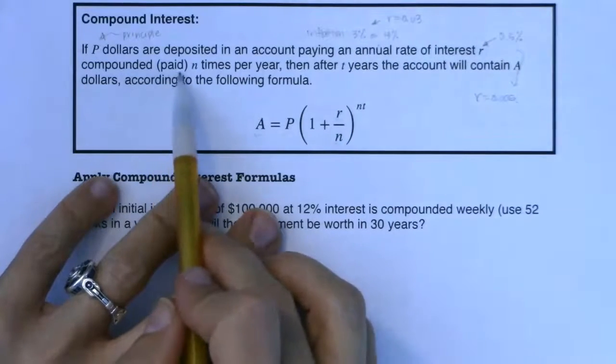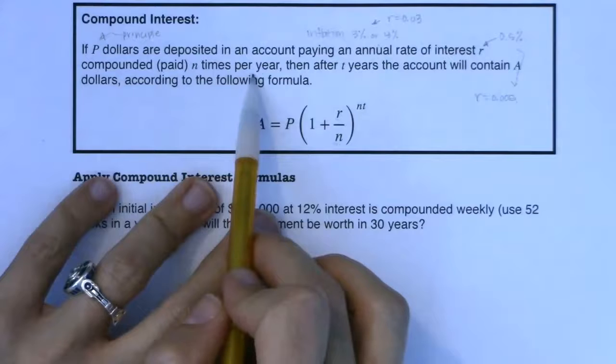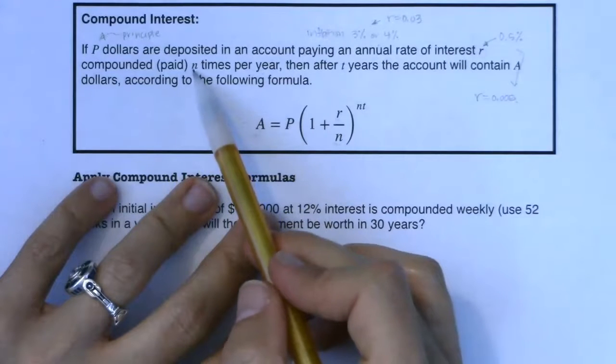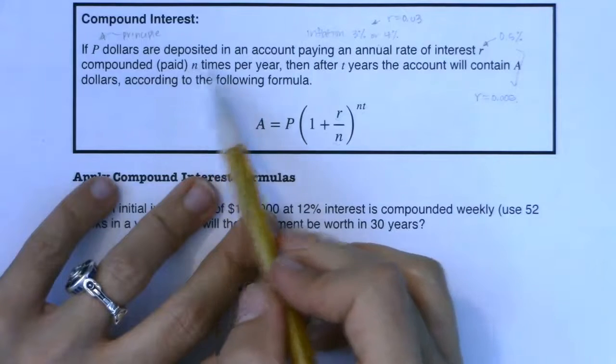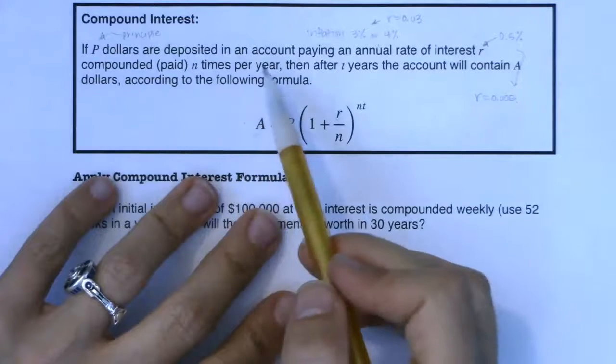All right. Now you can get interest paid to you N times per year. In my personal savings account, I get interest paid to me once a month. So N would be 12.